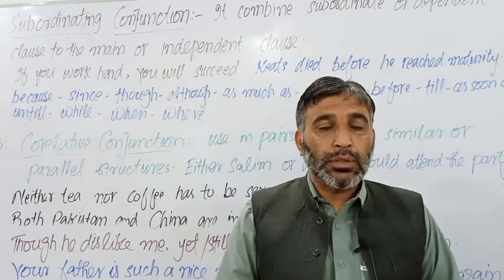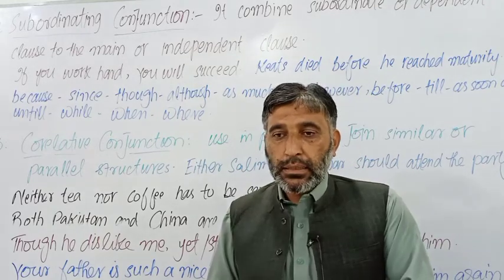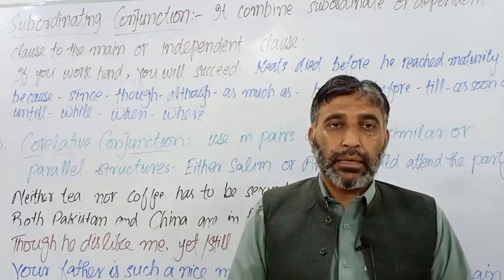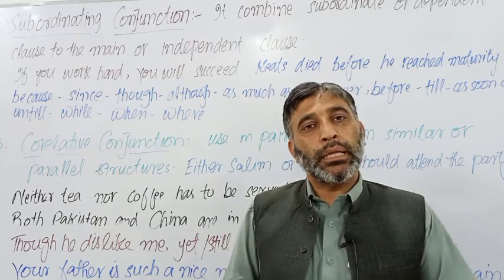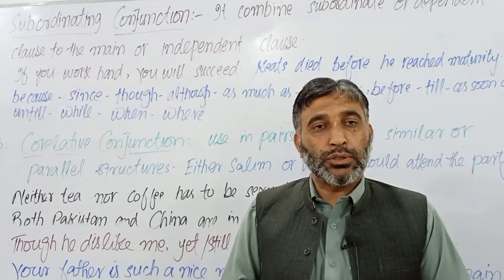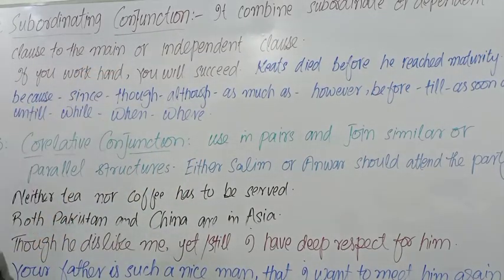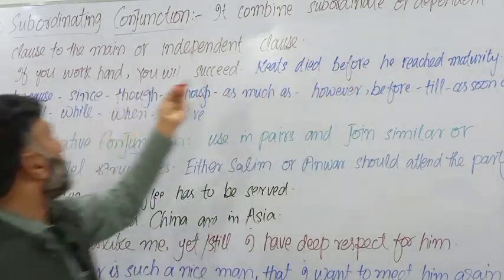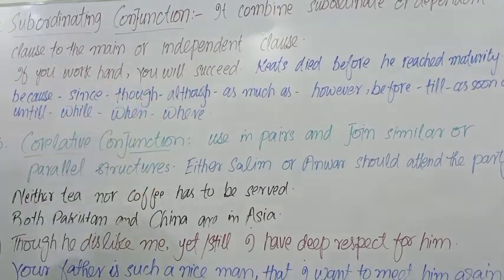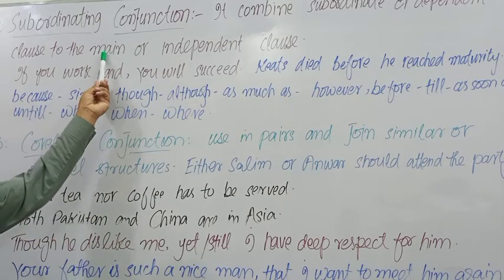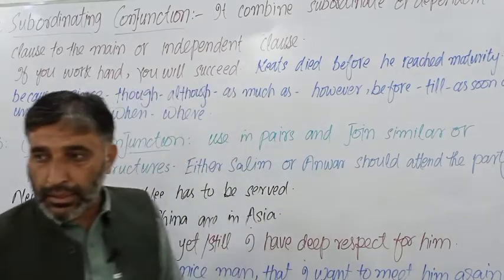Subordinating conjunction وہی ہوتا ہے جو کسی بھی subordinate class یا dependent class کو independent class یا main class کے ساتھ ملا لیتا ہے. Subordinate class کو dependent بھی کہتے ہیں اور main class کو independent یعنی آزاد class بھی کہتے ہیں. آزاد وہی ہوتا ہے جو اپنا معنی خود دے سکتا ہے. It combines subordinate and dependent classes to the main and independent class.